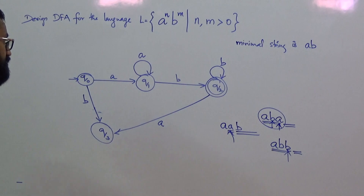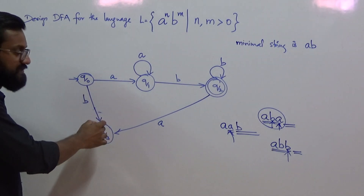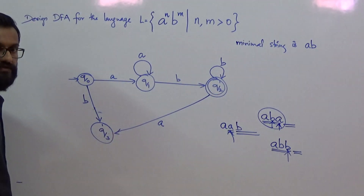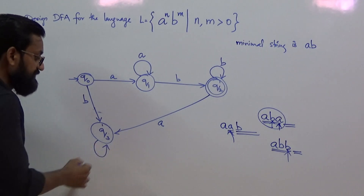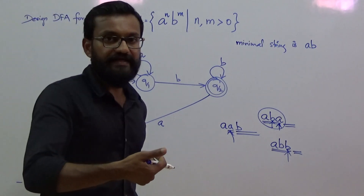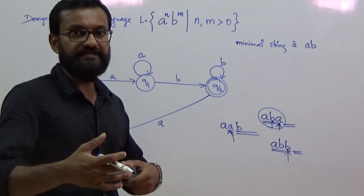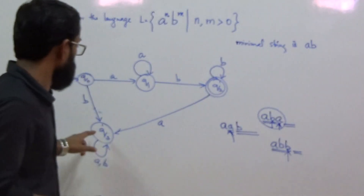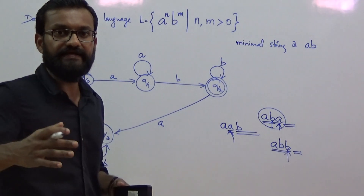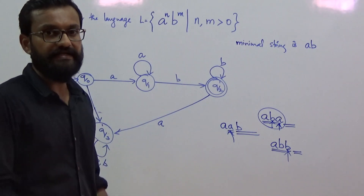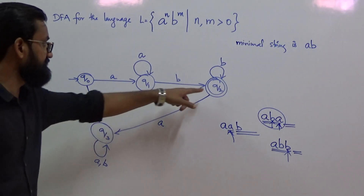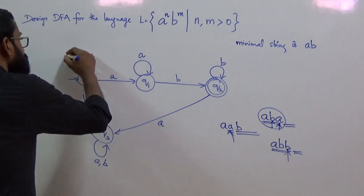Now for state q3: if a string starts with B, the machine goes to this trap state. And once after reading B, if A is encountered, that also goes to q3. Q3 is a trap state — whenever the machine identifies an invalid string, it goes to trap state q3 and remains there. Whatever remaining symbol, either A or B, the machine just reads it and stays in the trap state. The final state is not reachable from the trap state.